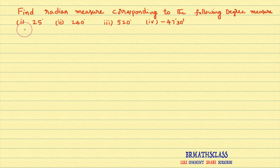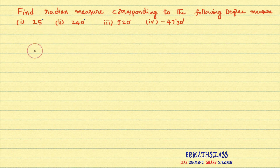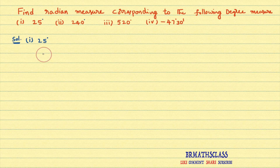Observe these bits. They measured angle in degrees. We need to convert these degree measures into radian measure. How to convert degree measure into radian measure? This is very easy. Please try to understand. Watch this video till the end.